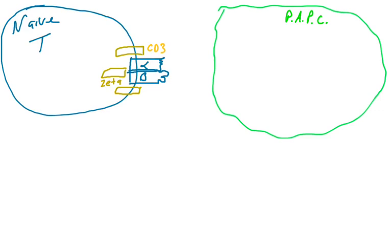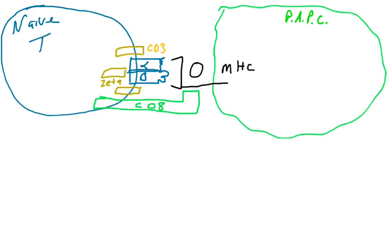The T-cell receptor complex is on the surface of all naive T-cells. Depending on whether this is a CD8 T-cell or a CD4 T-cell, it will check MHC class 1 or MHC class 2 molecules respectively. For a CD8 positive naive T-cell, CD8 binds to the alpha chain of MHC class 1. The cell presents a peptide on its surface — this could be a self-peptide or a non-self-peptide from a virus or bacteria — and that peptide is presented to the naive T-cell, which has a unique antigen binding site generated via VDJ recombination and junctional diversity.